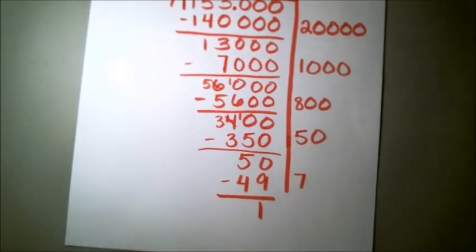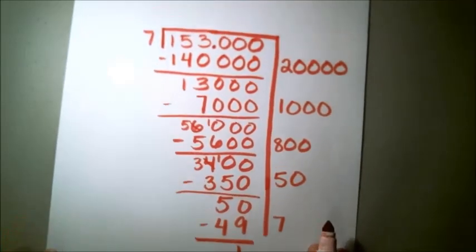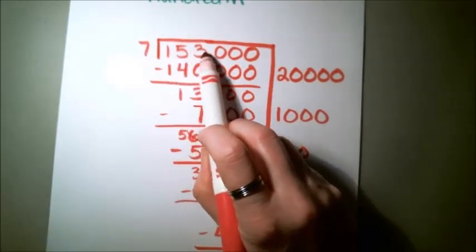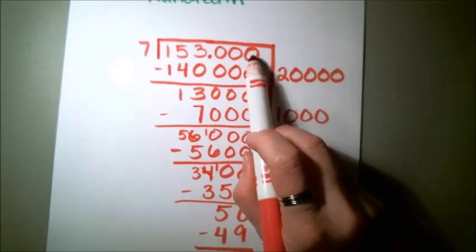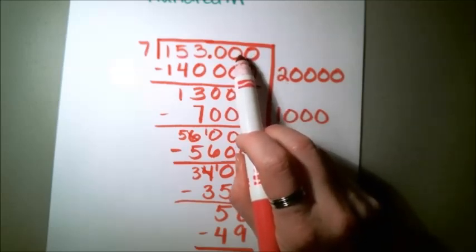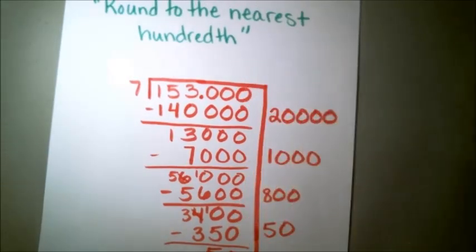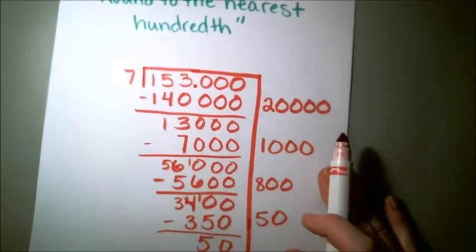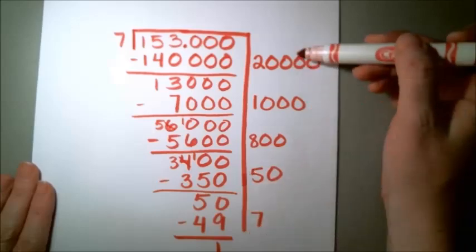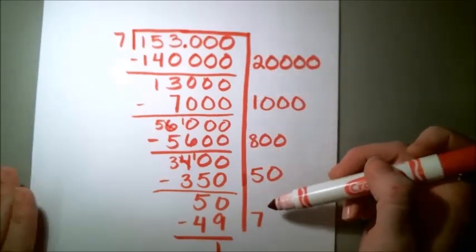So this one doesn't come out evenly. I don't even really care about this 1 anymore because I know that I've divided enough. I've done enough place values to get that thousandth place that I need in order to round to the nearest hundredth. Because after the thousandth place, it doesn't really matter what's in the ten thousandth and hundred thousandth and all of those place values off to the right.